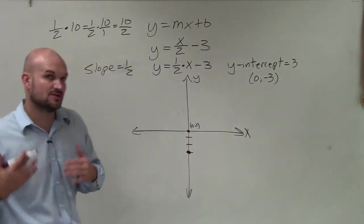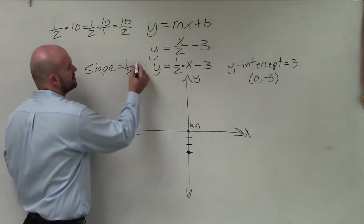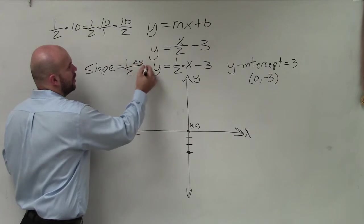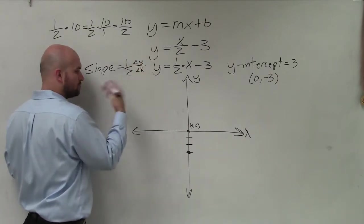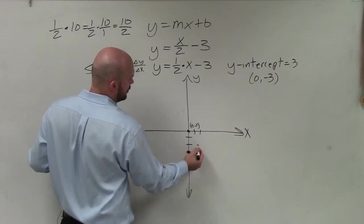Now, the slope represents a ratio. So we're going to use the ratio to find our next point. Remember, it's the change in y over our change in our x coordinates, or rise over run. So I can go up 1 over 2.